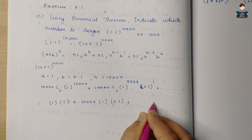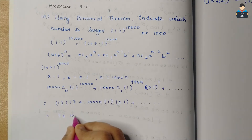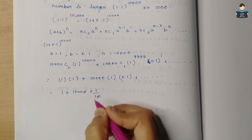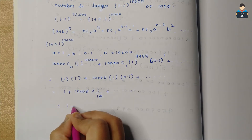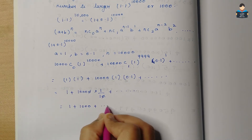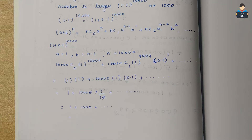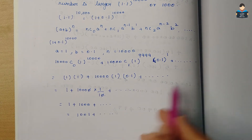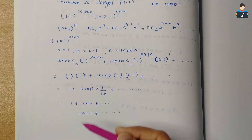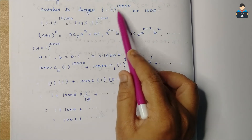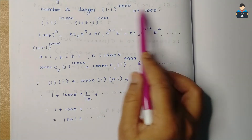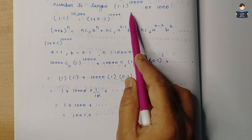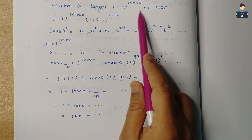So just from the first two terms, 1.1^10000 is greater than 1 + 1000 = 1001. Since the remaining terms of the binomial expansion are all positive, 1.1^10000 is greater than 1000. So the first two terms alone give us more than 1000.